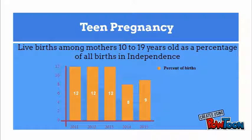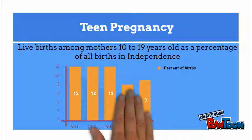Teen pregnancy was a top five concern for children among survey respondents. As you can see in the graph, the teen birth rate in Independence is declining. However, Independence has a higher teen birth rate than the county and state, with double the rate of the nation as a whole.